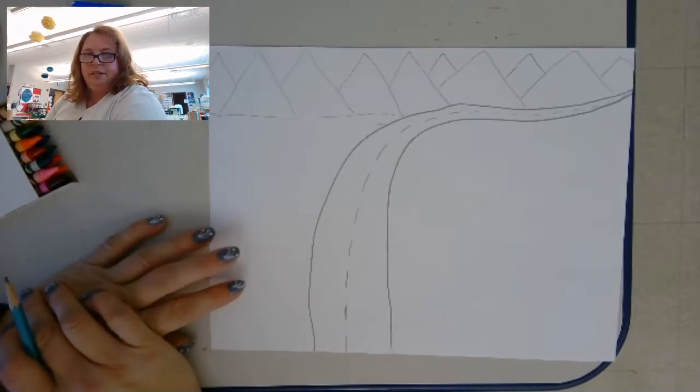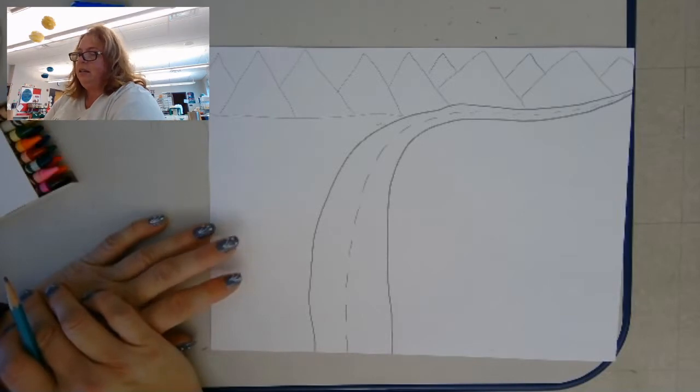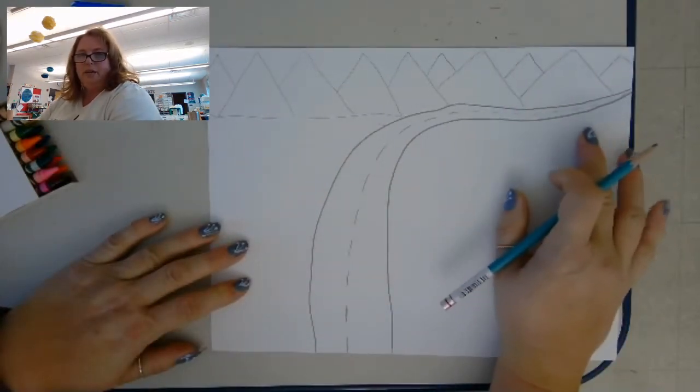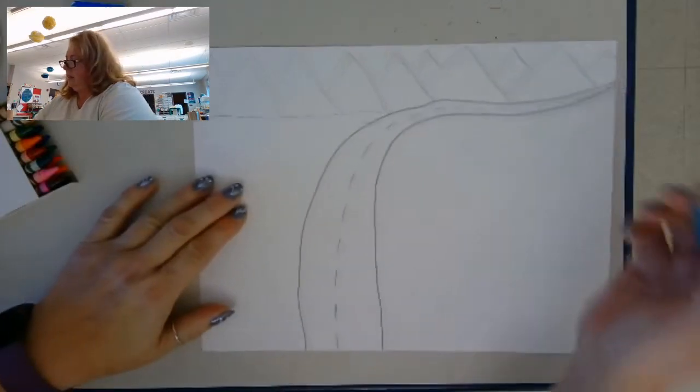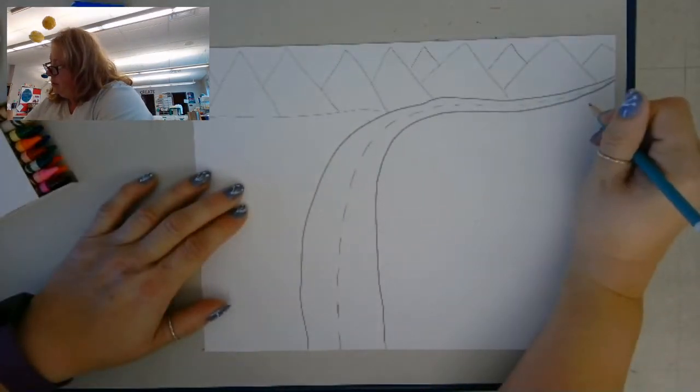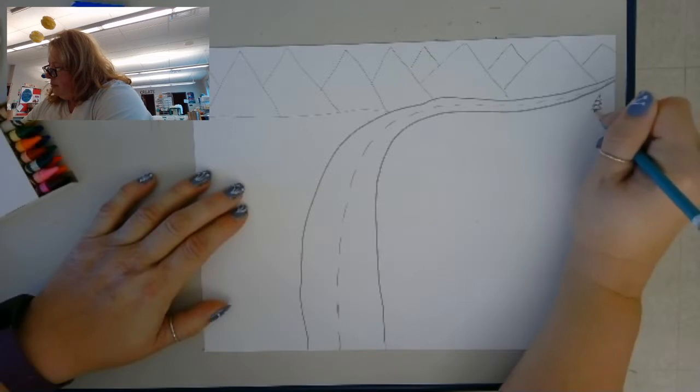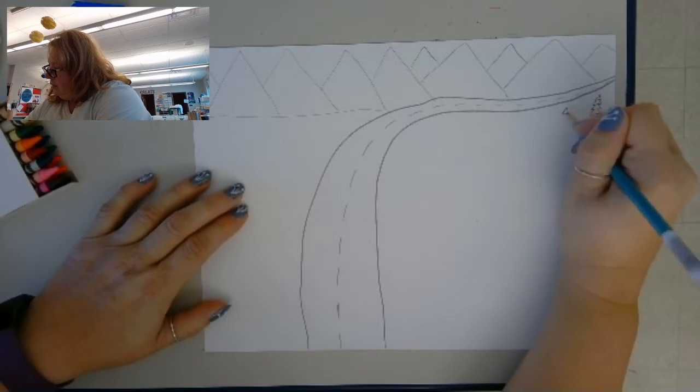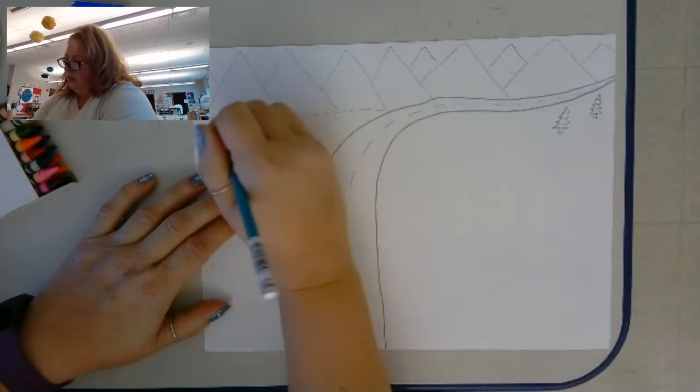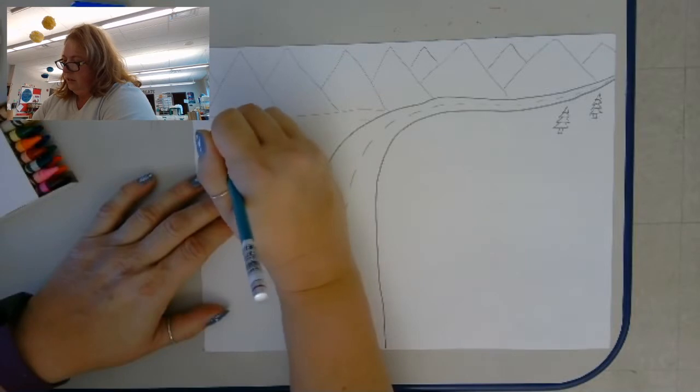Now I'm going to do some trees. I'm going to do some pine trees. The ones I draw back here are going to be much smaller than the ones I draw up here. I'm just using some little shapes to make my trees, and you can draw as many as you want.